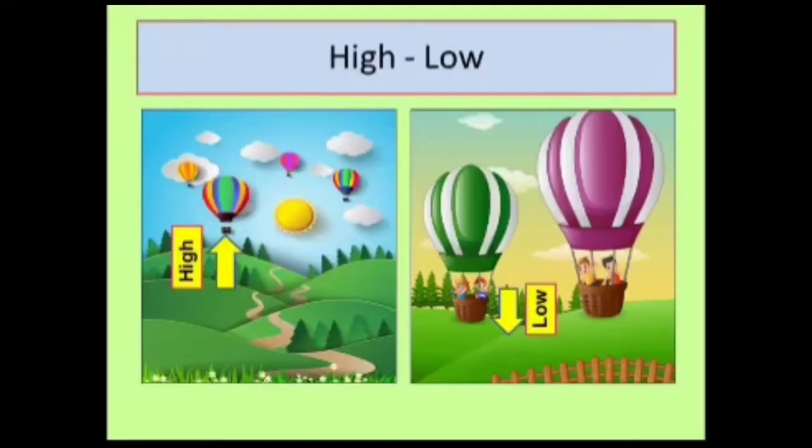Now children, I will explain concept of high and low through pictures. Let me make some examples. H, I, G, H is high means at high level. Hindi mein hum usse oonchai bhi bol sakte hai. L, O, W is low means at low level. Hindi mein hum kam oonchai bhi bol sakte hai.